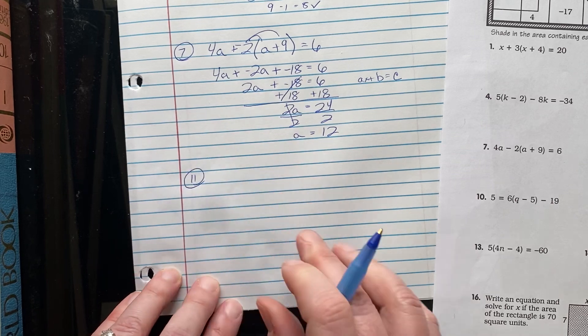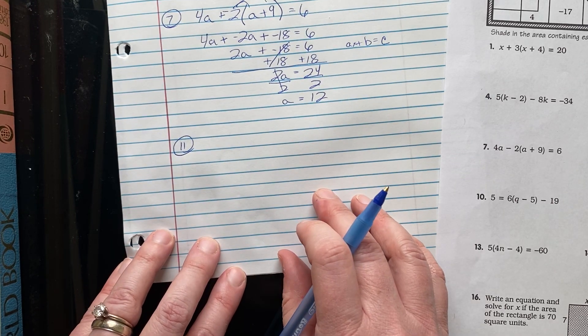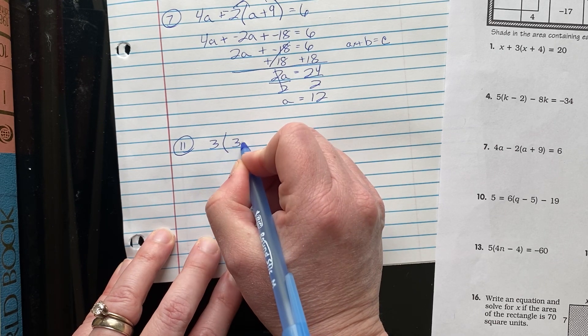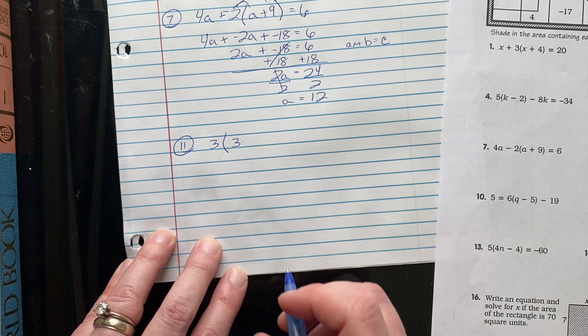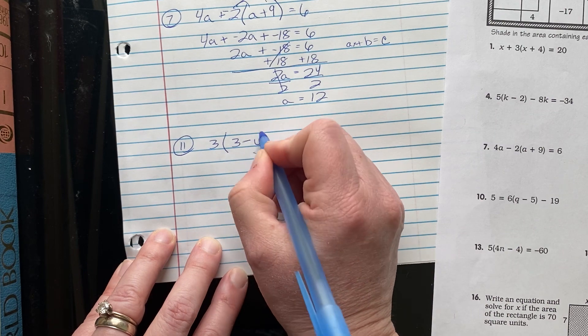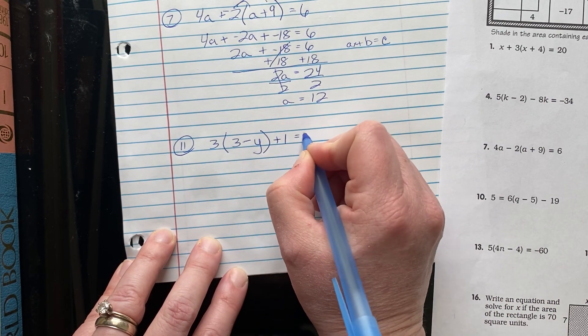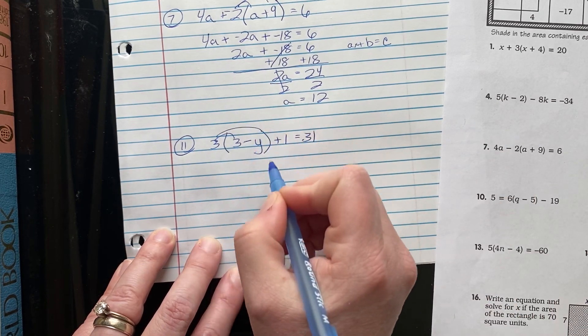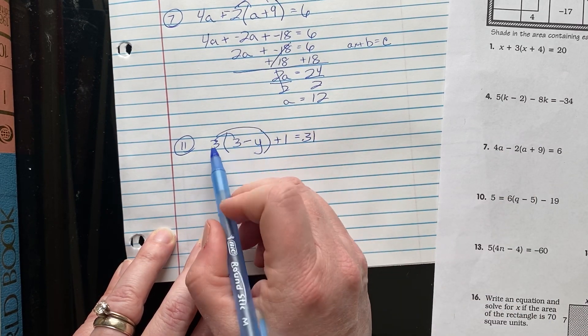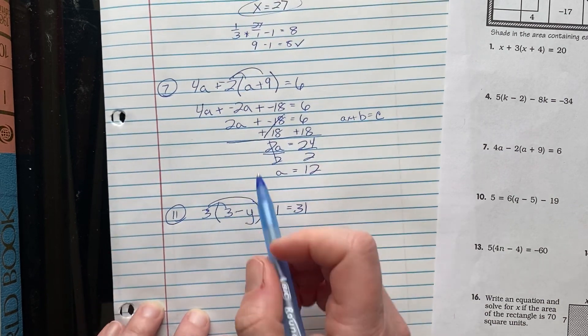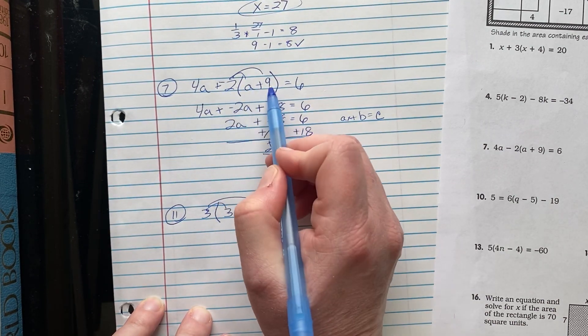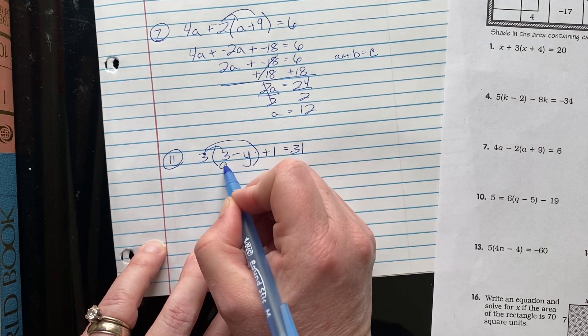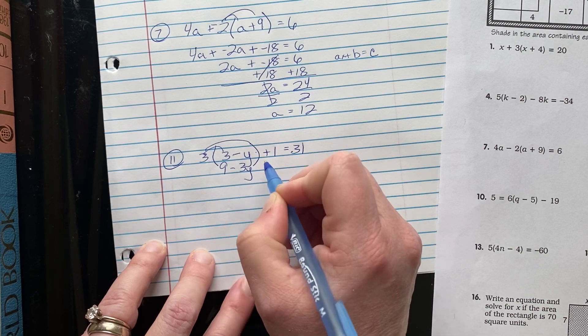And I said that I would do number 11. That'll be the last one I do here. Three times the quantity three. Well, why did I choose this one? Minus y close quantity plus one equals 31. So here I'm going to distribute. I'm not really going to add the opposite here because I don't have to. This is a positive factor that I'm distributing. Here I added the opposite to distribute a negative factor. Here I can add the opposite, but I really don't have to. And that's going to be personal preference in this one.